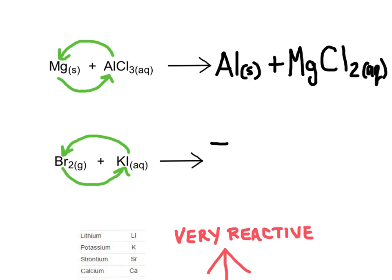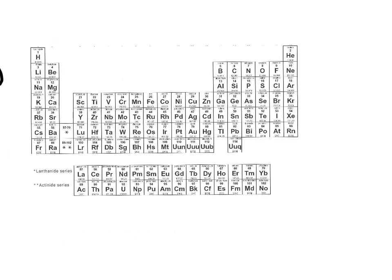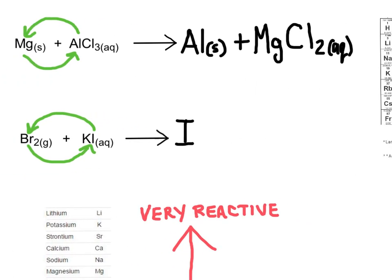Iodine will end up all on its own, but we need to keep track of what elements look like when they're by themselves. Metals are just their symbol with a little 's' for solid. Iodine, however, is a diatomic element — when found alone in nature, it exists as two atoms bonded together. There are seven diatomic elements: nitrogen, oxygen, fluorine, chlorine, bromine, iodine, and hydrogen. These six form an L-shape on the periodic table, plus hydrogen. So I'll write iodine as I₂(s).